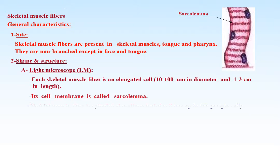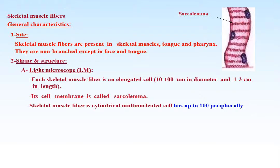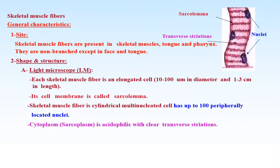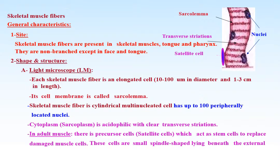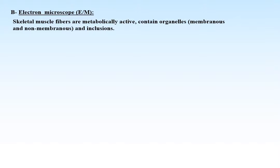Its cell membrane is called the sarcolemma. Skeletal muscle fiber is a cylindrical multi-nucleated cell with up to 100 nuclei peripherally located. The cytoplasm is called sarcoplasm, is acidophilic, with clear transverse striations. In adult muscles, there are precursor cells called satellite cells which act as stem cells to replace damaged muscle cells. These are small spindle-shaped cells lying beneath the external lamina of a muscle fiber.